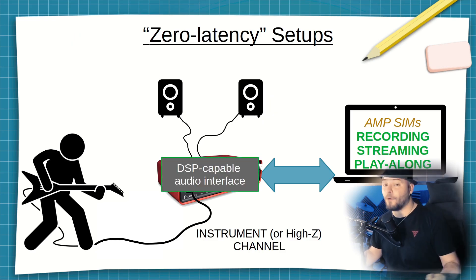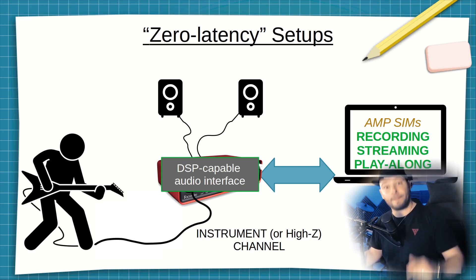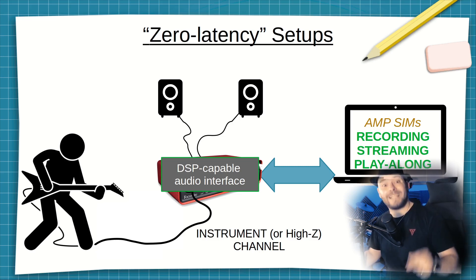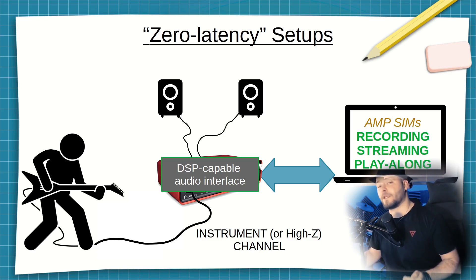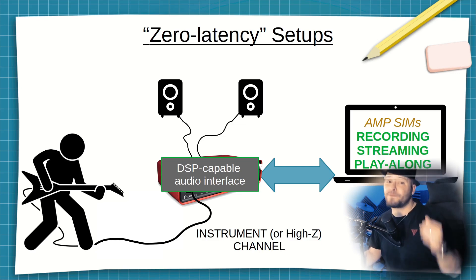The last zero latency case is probably also the most expensive one: a DSP-capable audio interface. These interfaces can load a plugin like an amp sim within the interface itself. But be aware — this is not a generic solution. Third-party plugins are not supported, only proprietary ones. So if you want to run Neural DSP amp sims this way, you actually need their Quad Cortex, which is a standalone box that can also be used as an audio interface — but then you're limited to those plugins only. Realistically, the better option is to run the amp sim in your computer, especially if you want to try many different things.